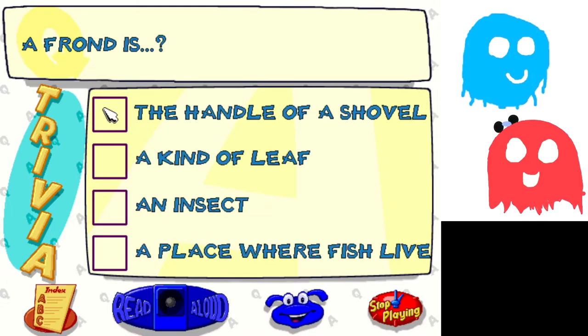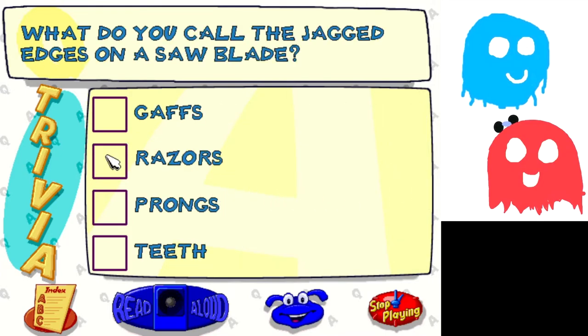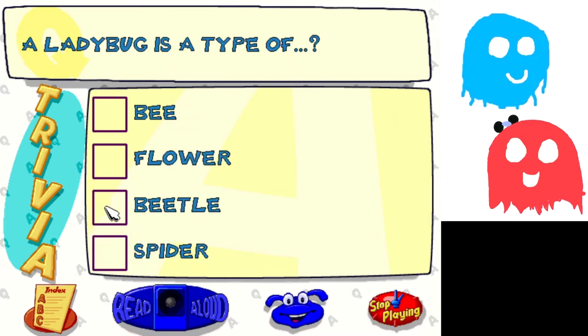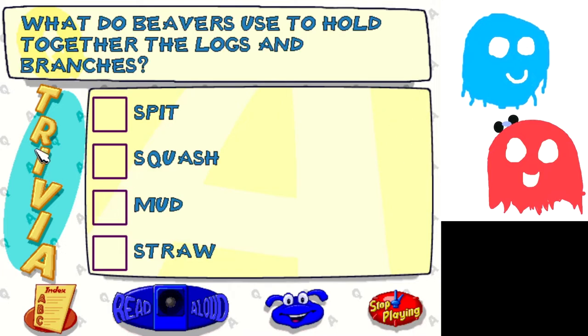Someone's playing World of Warcraft. Where did persimmons originally come from? China, I think. Not California for sure. It sounds like China or Japan. I think it's China. I don't know how I knew that, but I think Animal Crossing might have told me that. A frond is a kind of leaf. Oh, I did not know that at all! What do you call the jagged edges on a saw blade? They're teeth. Yes! A ladybug is a type of beetle. Flower. What do beavers use to put together the logs and branches? Mud. Squash, they grow their own squash!